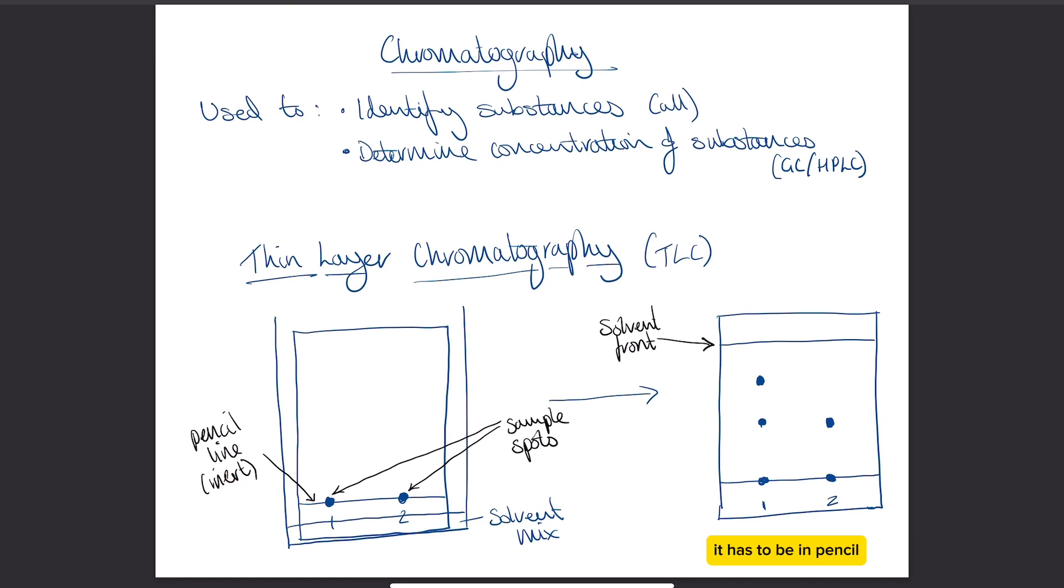It has to be in pencil because the pencil won't interact with your samples, whereas ink from a pen would interact. Then you add your samples that you're analyzing onto the plate and you just put them on as small spots using a little glass tube called a capillary tube.